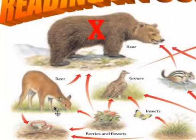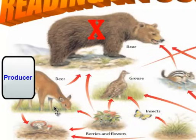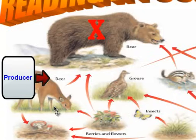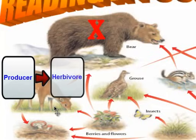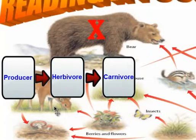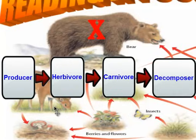You need to find a food chain within this web. There's a particular order to follow: the first link is always a producer, since producers don't depend on other organisms for nutrients. Following the producer comes an herbivore, then the energy flows from the herbivore into a carnivore. The very last link in the chain, no matter how long, is always a decomposer.